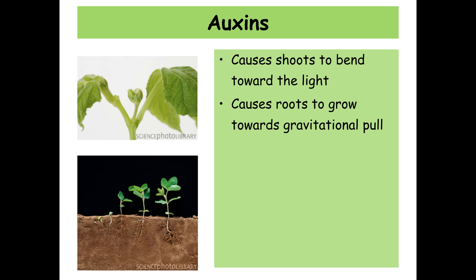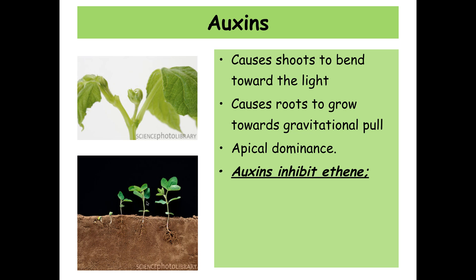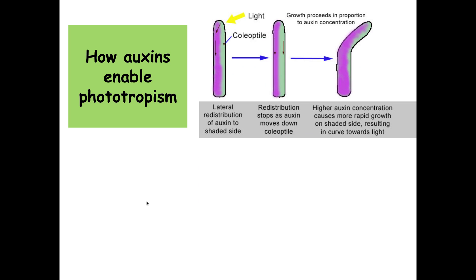Positive phototropism is where shoots bend towards the light, and positive geotropism is where the roots grow towards the gravitational pull. Apical dominance is where the shoot carries on growing upwards with very little lateral growth — lateral growth being the side shoots on the plant. Auxin inhibits ethene, and since ethene causes fruit ripening and leaf fall, auxin will inhibit those processes from happening.